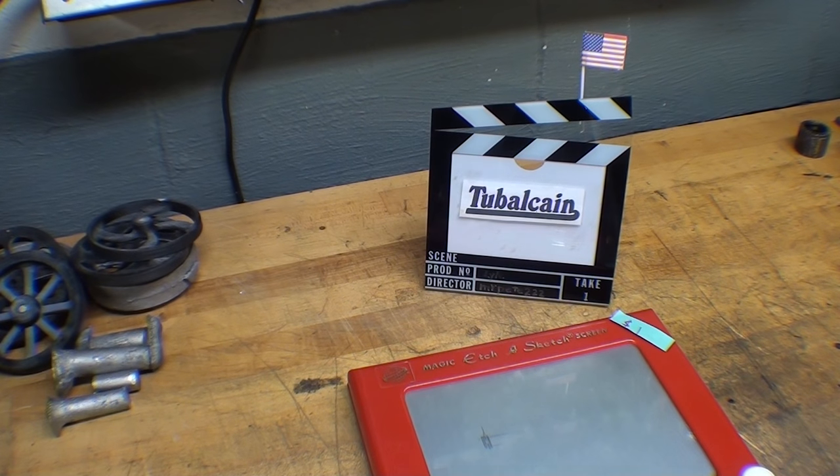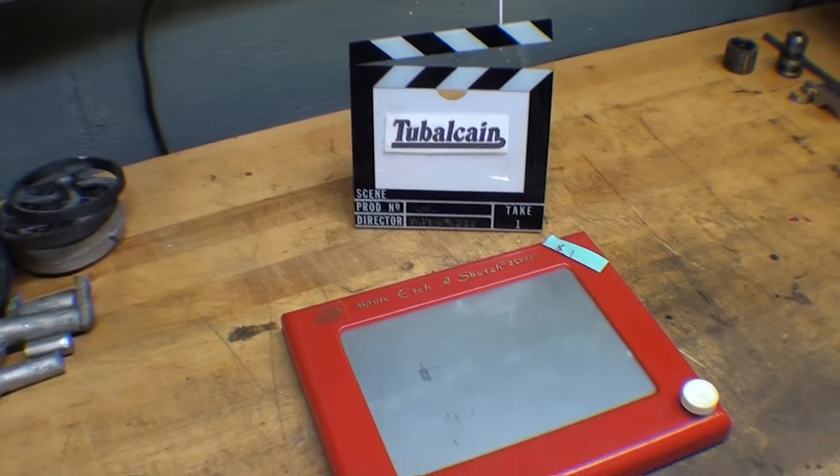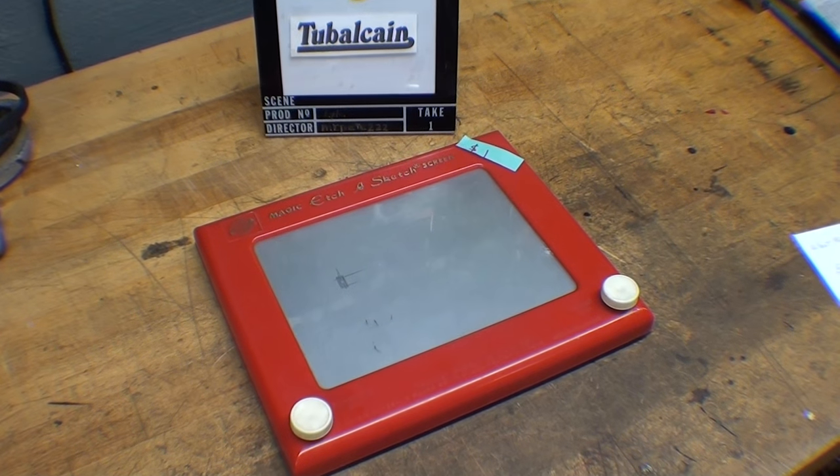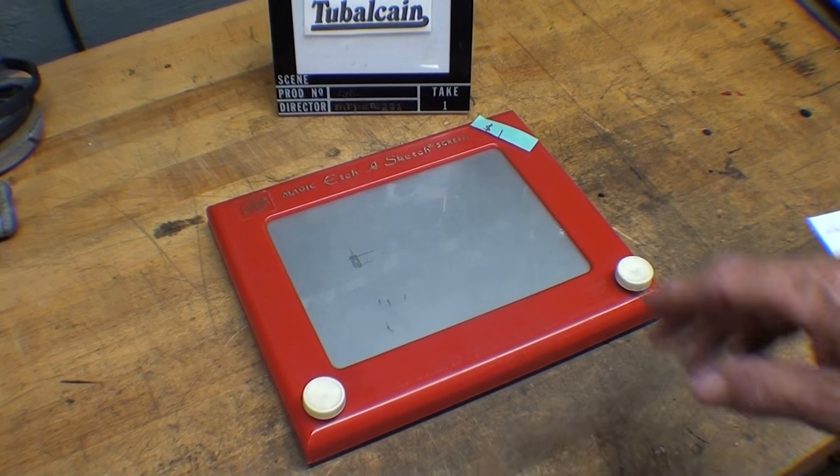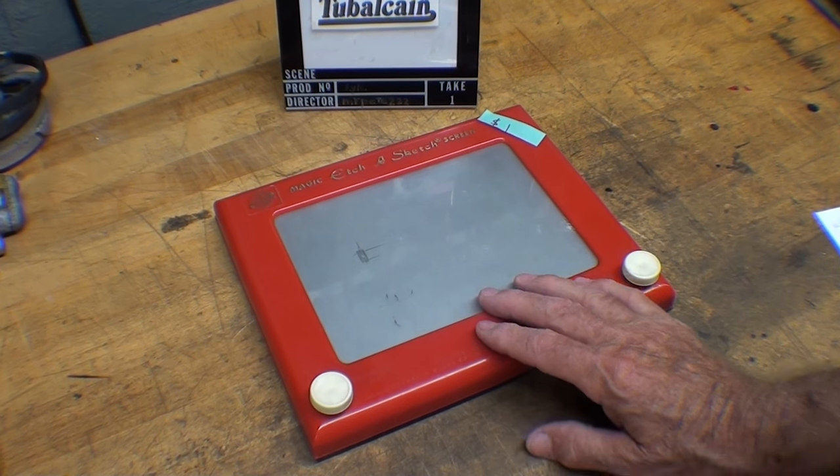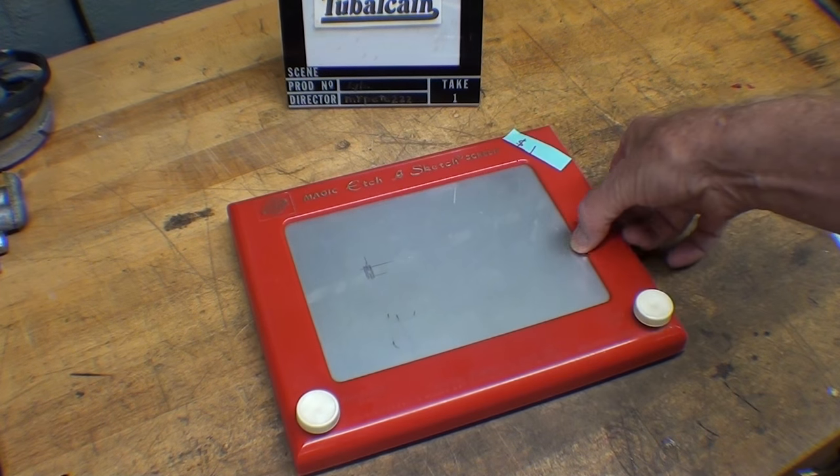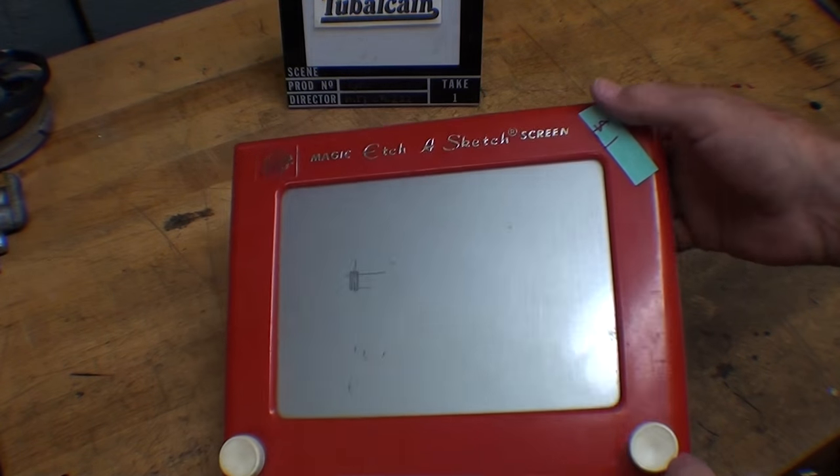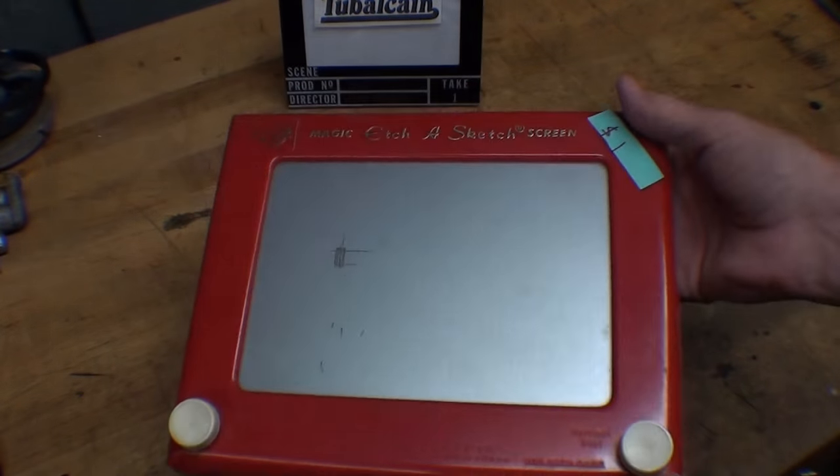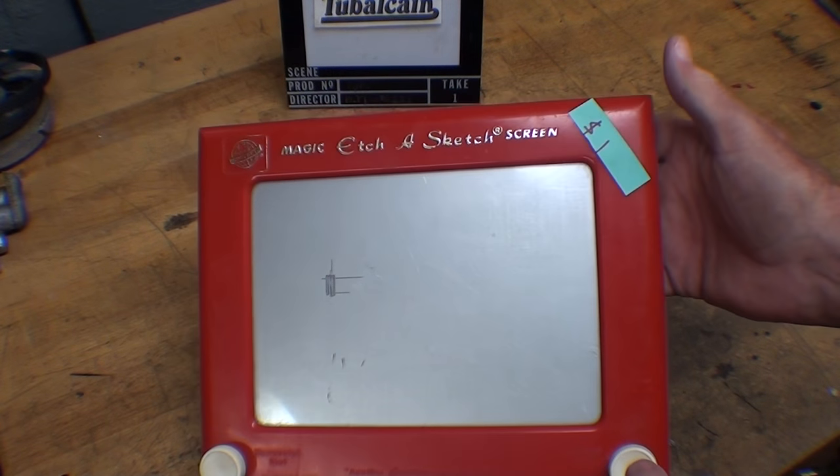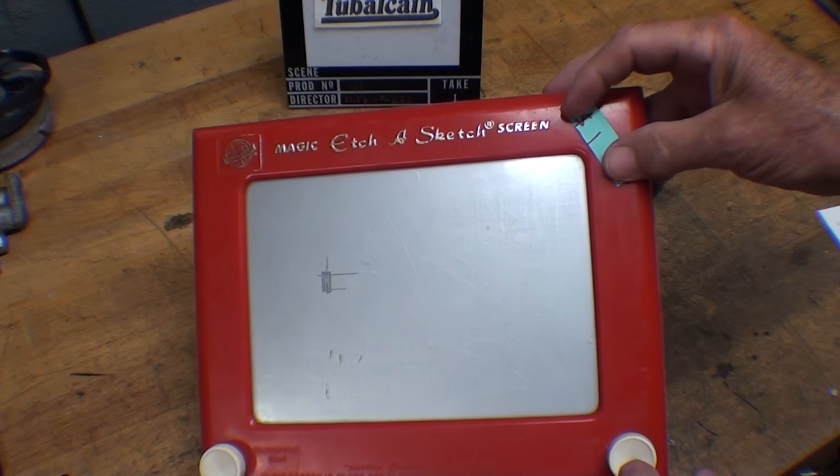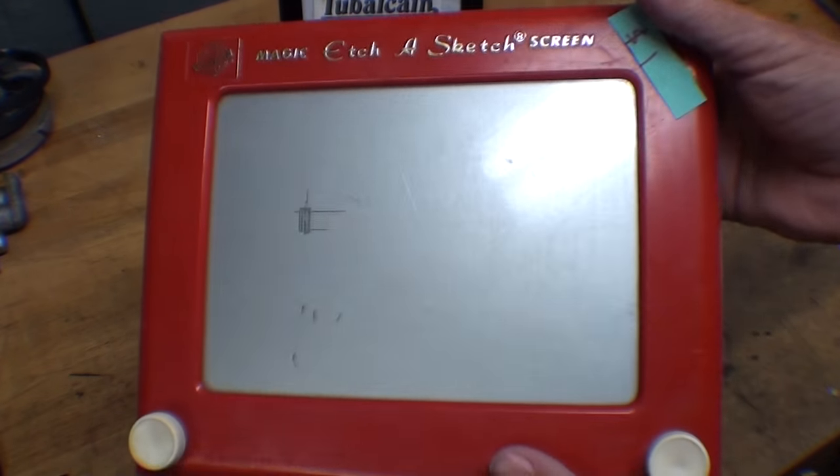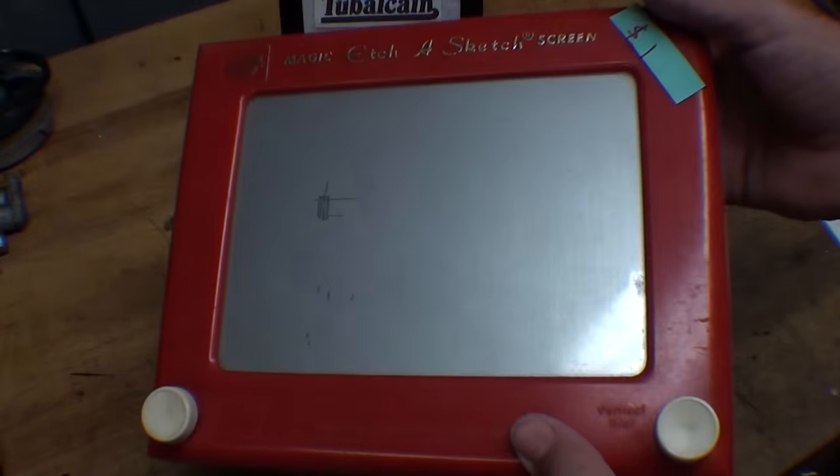Howdy, it's Tubal Cain again and this is episode number 22 of my What Makes It Work series. This will be dedicated to the ubiquitous Ohio Art Etch-A-Sketch that's been around since I was a teenager, maybe even before. I always wondered how one of these worked and I bought this for a buck at a garage sale, so I'm going to sacrifice it.